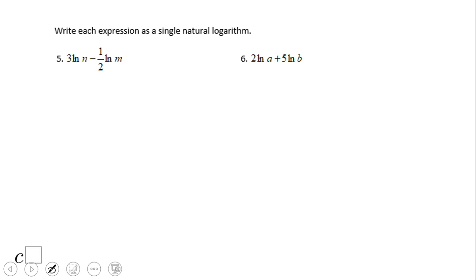Let's take a look at numbers 5 and 6. In number 5, we have 3 ln n minus one-half ln m. First, we're going to use the power rule and move the coefficient—the number in front of the logs—as exponents. So we have ln n³ minus ln m^(1/2).